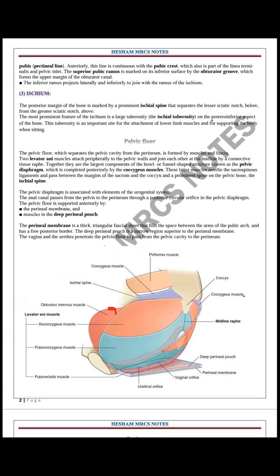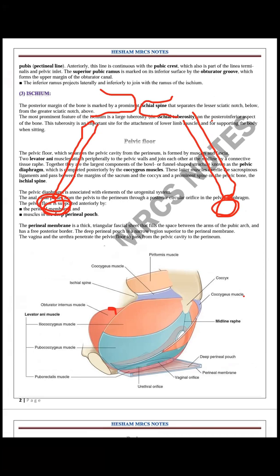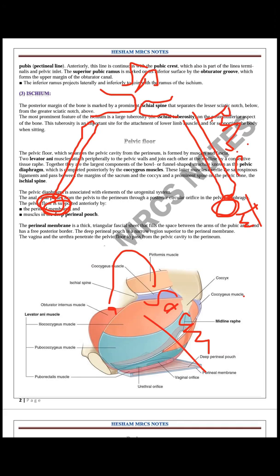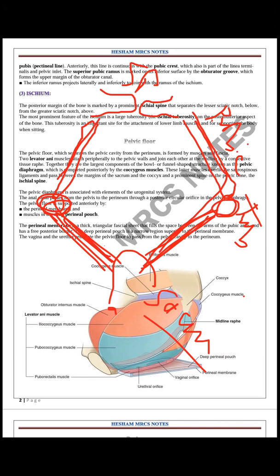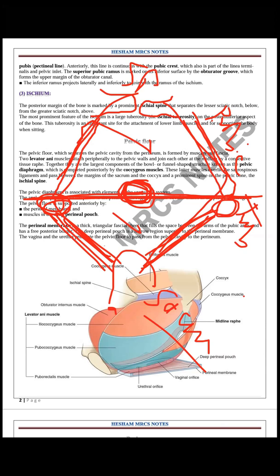The relevant bony landmarks are: the symphysis pubis, the body of the pubic bone, the ischial tuberosity, and the sacrum posteriorly. The inferior pubic ramus, ischial tuberosity, and from the sacrum to the ischial tuberosity there is the sacrotuberous ligament. This diamond-shaped area is the perineum, with the perineal body at its center. An imaginary transverse line divides the perineum into the anterior urogenital triangle and the posterior anal triangle.